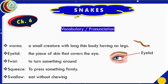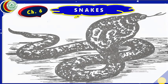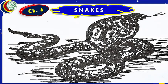Dear students, we shall start our lesson 6 today — that is about snakes. I have written here some of the words. Worms are small creatures with a long thin body. Eyelid is the upper part of our eye that is used to close our eye. Twist means to turn something around. Squeeze means to press something firmly. Swallow means to eat something without chewing.